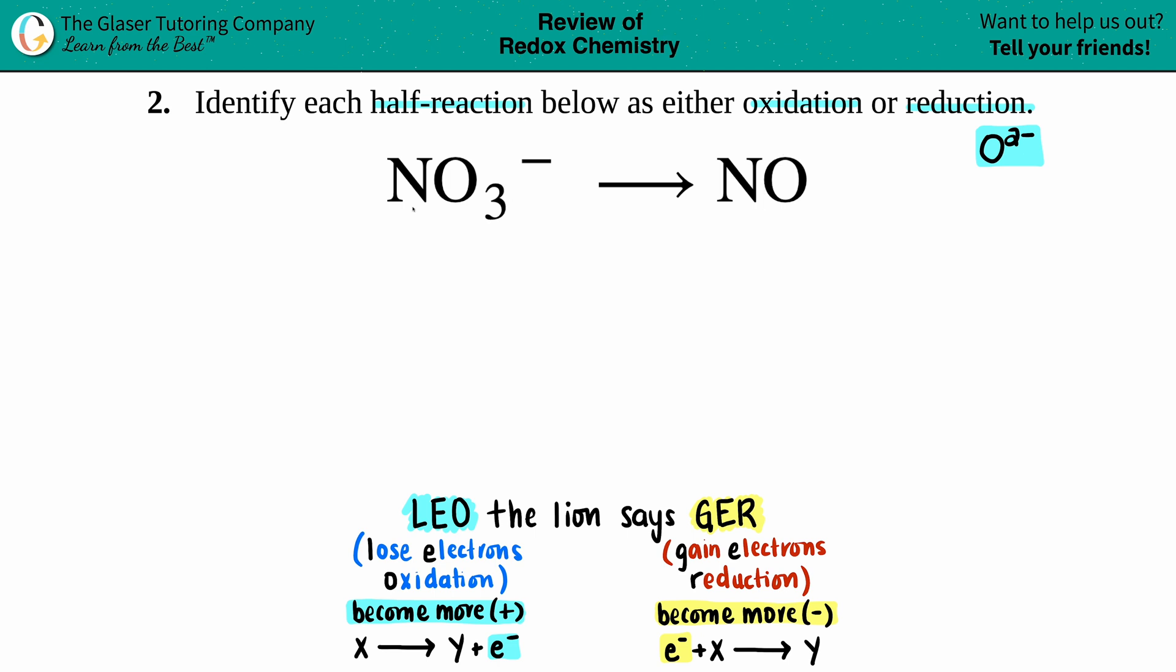Which means that the nitrogen is the one that is going to change charges. So that's the key here: we just have to find out what the charges of the nitrogen are, and then we can see where the electrons are going to go. It doesn't matter which one you start with, let's just start with the NO.